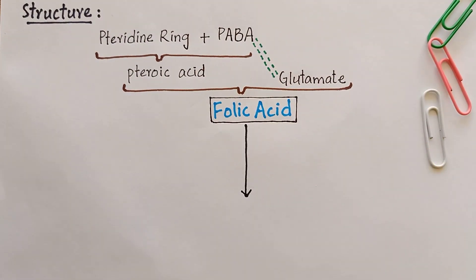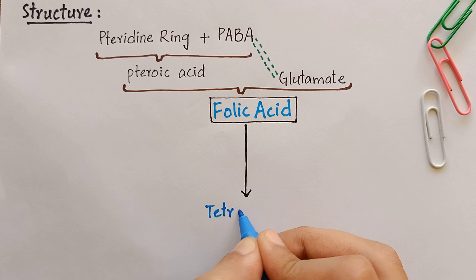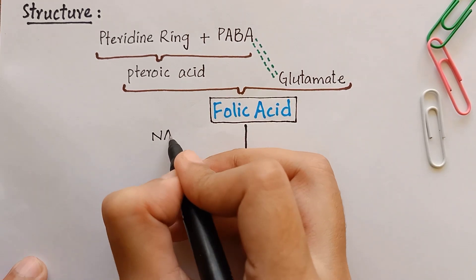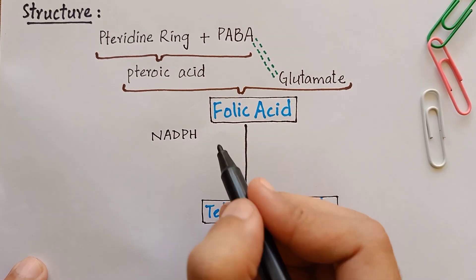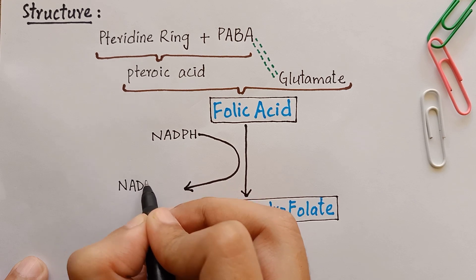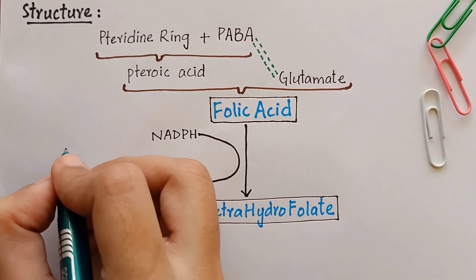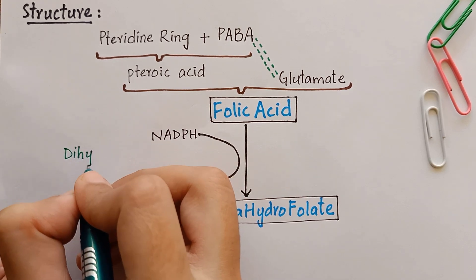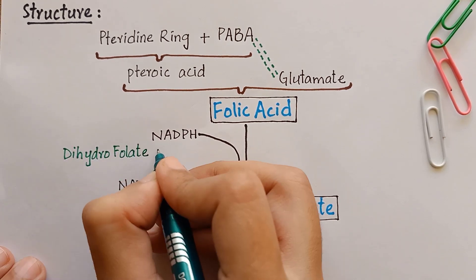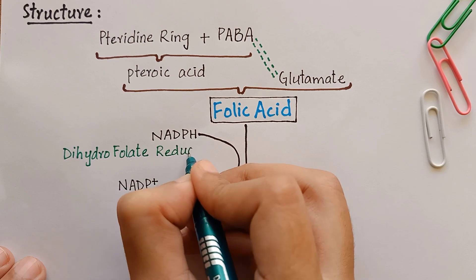The active form of folic acid is tetrahydrofolate, which is synthesized from folic acid by NADPH-dependent dihydrofolate reductase.